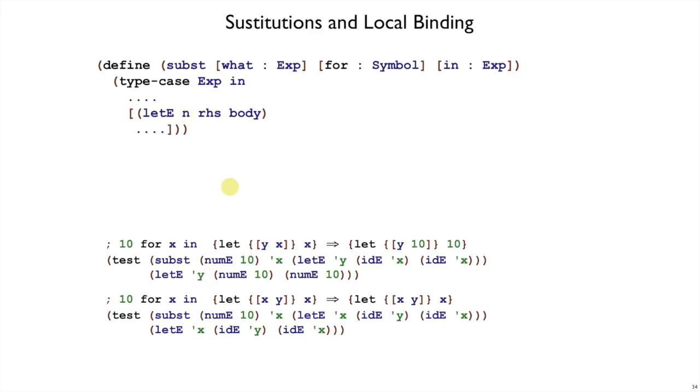n is a symbol. So in this particular, in this first example here, 10 is the what argument to subst, x is the for argument to subst, and this whole let expression, that is the n argument that we're doing a type case on. So this n refers to that y right there. Right hand side refers to the x and body refers to the x. So what do we want to get out in this case? In this particular example, we want these x's to both be replaced by tens.